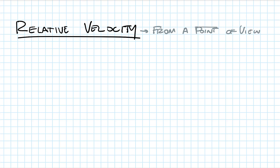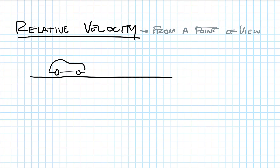The easiest thing we could talk about for relative velocity would be if you were in a car driving down a road at 40 meters per second — which is way too fast — and there was another car, the red car, driving down the road at only 30 meters per second.